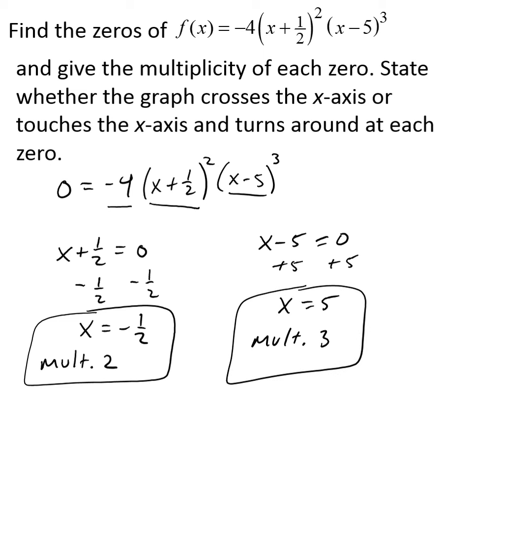One of the things the multiplicity tells us is about the behavior of the graph of the function around these points. These are essentially x-intercepts, because we have replaced the f of x, or the y coordinate, with zero. So these would be points on the x-axis. And the multiplicity will tell us whether the graph crosses the x-axis at that point, or touches it and turns around. Another way to say it is maybe bounces off.